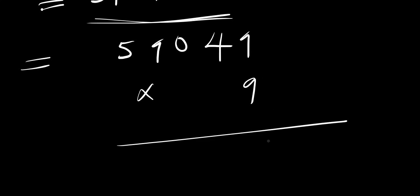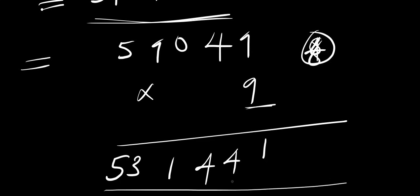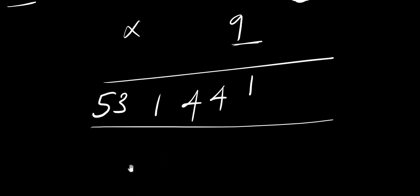Multiplying 59049 by 9: 9×9 is 81, write 1 carry 8; 9×4 is 36, plus 8 is 44, write 4 carry 4; 9×0 is 0, plus 4 is 4; 9×9 is 81, write 1 carry 8; 9×5 is 45, plus 8 is 53. The result is 531441.